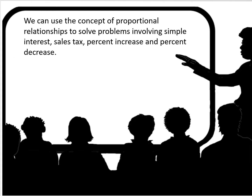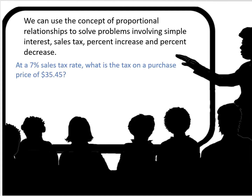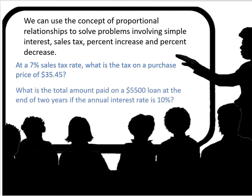We can use the concept of proportional relationships to solve problems involving simple interest, sales tax, percent increase, and percent decrease. For example, at a 7% sales tax rate, what is the tax on a purchase price of $35.45? And what is the total amount paid on a $5,500 loan at the end of two years if the annual interest rate is 10%?